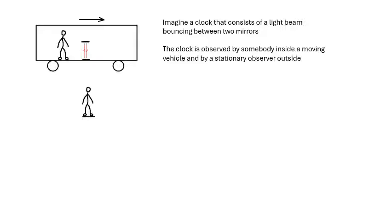For time dilation, consider a classic thought experiment: a light clock — a beam of light bouncing between two mirrors, going tick-tick-tick. If the mirrors were 3×10⁸ m apart, the beam would bounce every second. This clock is observed both by someone inside a moving vehicle and someone outside.